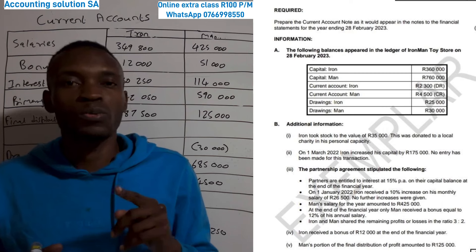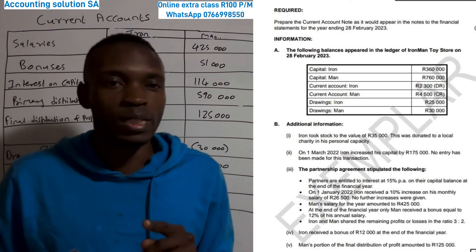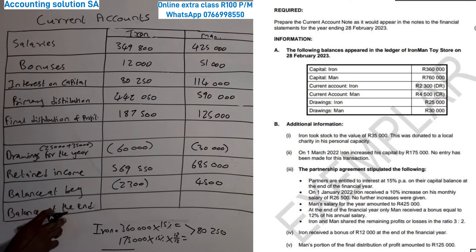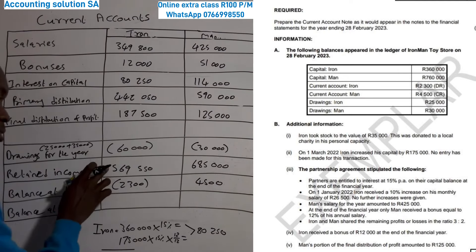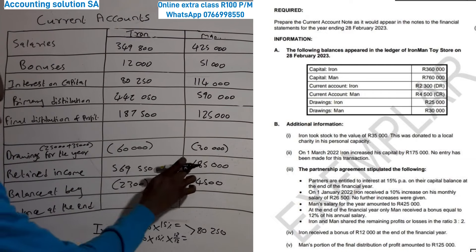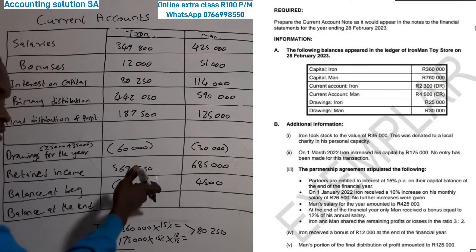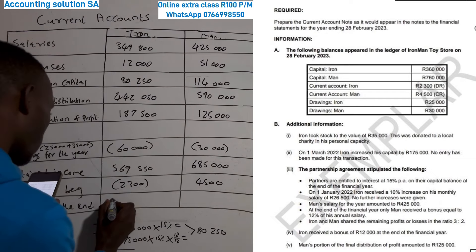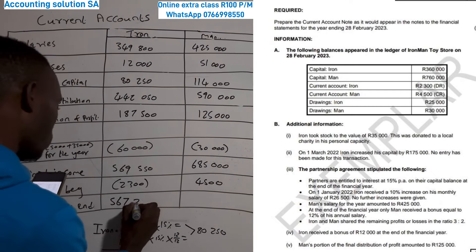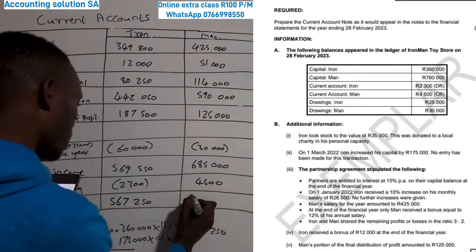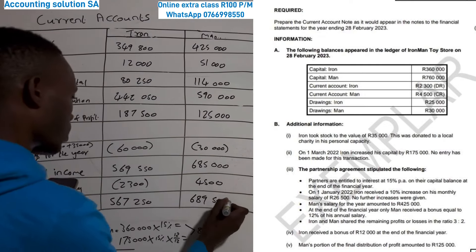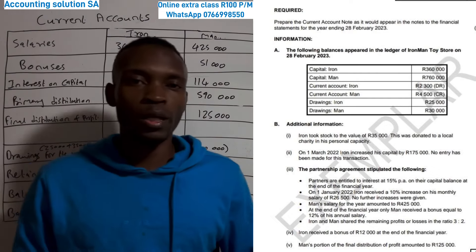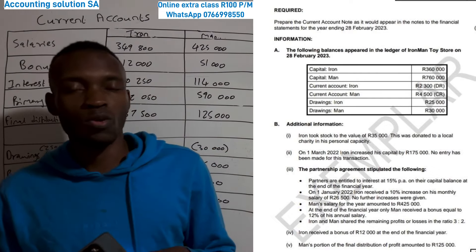Now for the closing balance at the end — it's very simple. You take the retained income and either add or subtract the opening balance depending on whether it is positive or negative. Iron's closing balance gives 567 250 and Men's closing balance gives 689 500. That's how you do it.